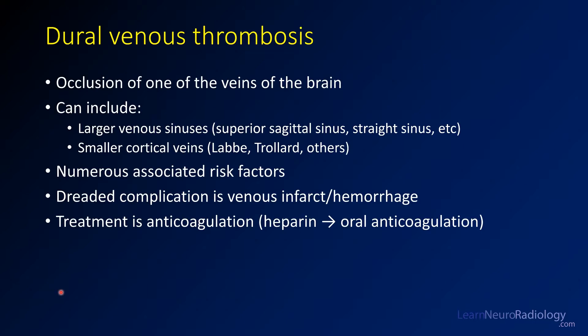What we have here is a case of dural venous thrombosis. This is an occlusion of one of the draining veins of the brain. These can either involve the large venous sinuses or smaller cortical veins. There are a number of risk factors. The worst feared complication is a venous infarct or hemorrhage. The treatment is anticoagulation, starting with heparin and then transitioning to oral anticoagulation — even if the patient has hemorrhage.